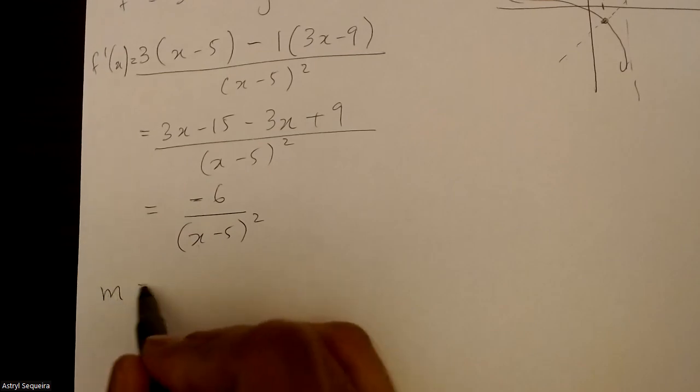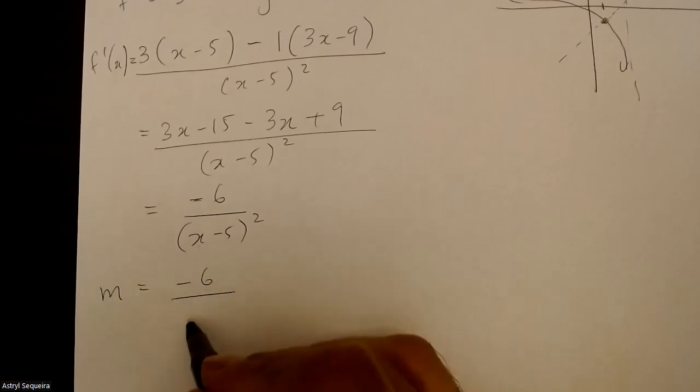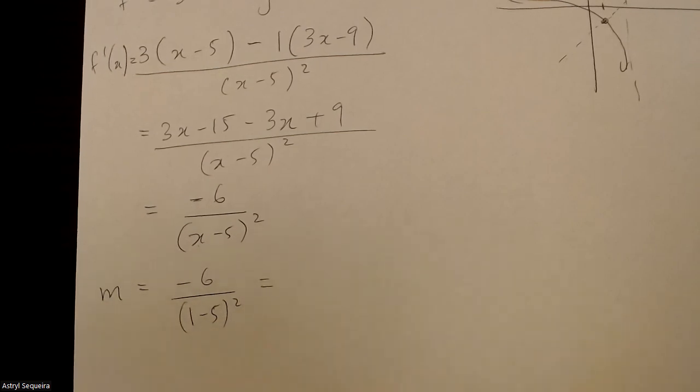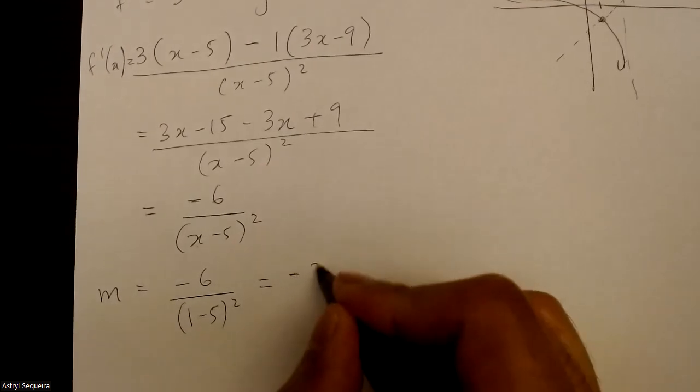That's going to give me my slope negative 6 over 1 minus 5 squared. I'll just do this in my calculator and do it manually as well. It's just negative 3 over 8.